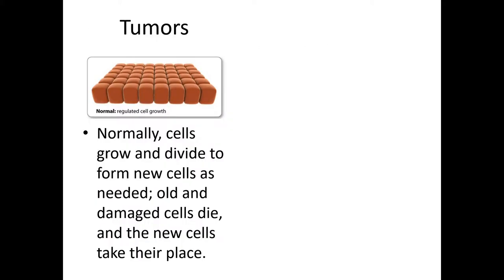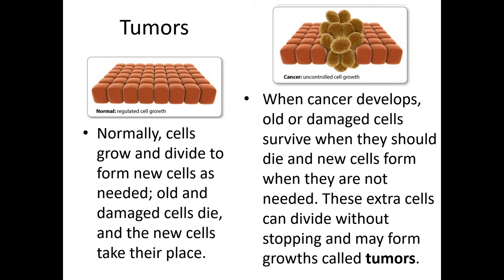Tumors form when cells grow abnormally. Normally, cells divide only to form new cells when they're needed — when old cells die, new cells take over. In tumors, those old cells don't die, and more cells form even when they weren't needed. These extra cells keep dividing without stopping, forming the growths we call tumors.